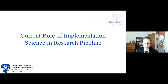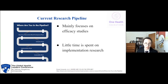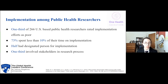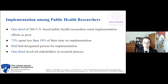So the current role of implementation science in the research pipeline. The current research pipeline focuses mainly on efficacy and effectiveness studies, and little time is spent on actual implementation research. One third of 266 US-based public health researchers rated implementation efforts as poor. 73% spent less than 10% of their time on implementation. Half had a designated person for implementation, and only one third involved stakeholders in the research process. You can see there are a lot of disparities in the current role of implementation science in the research pipeline.